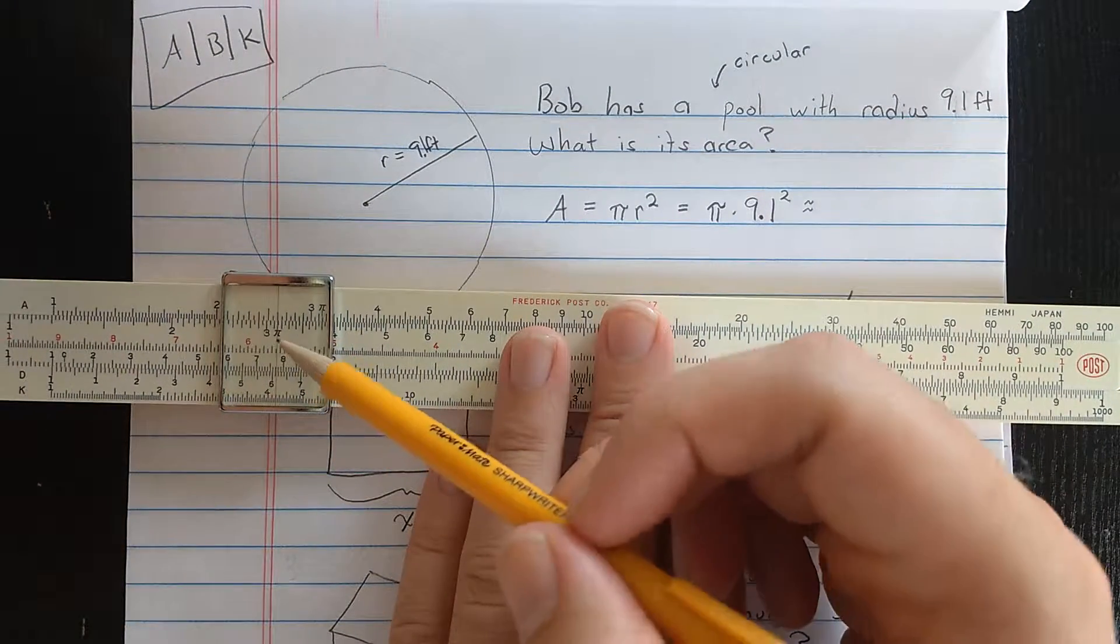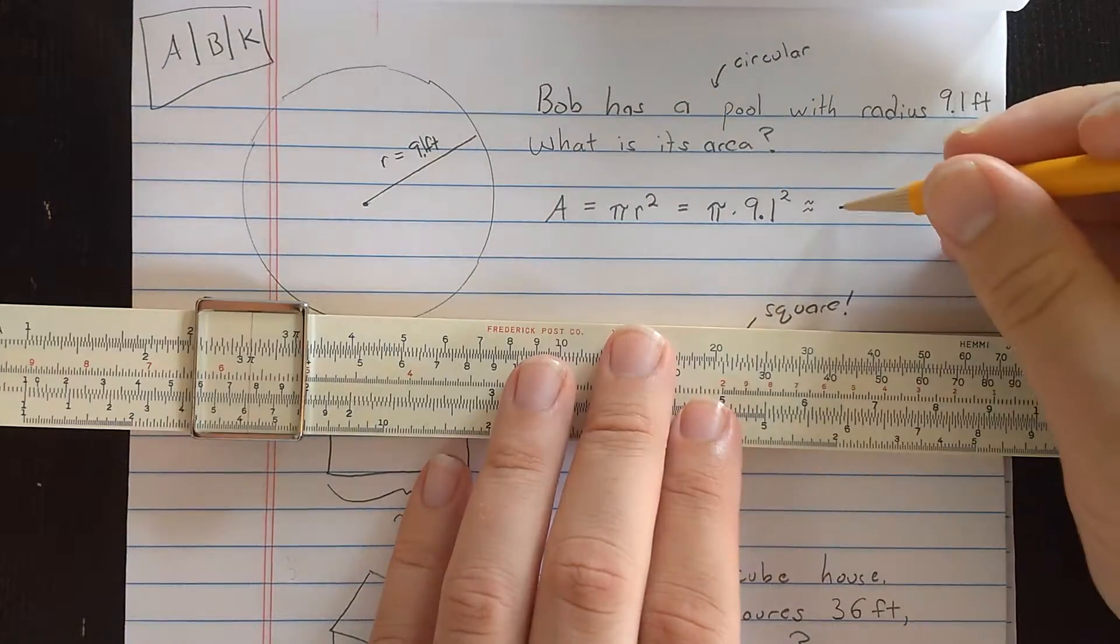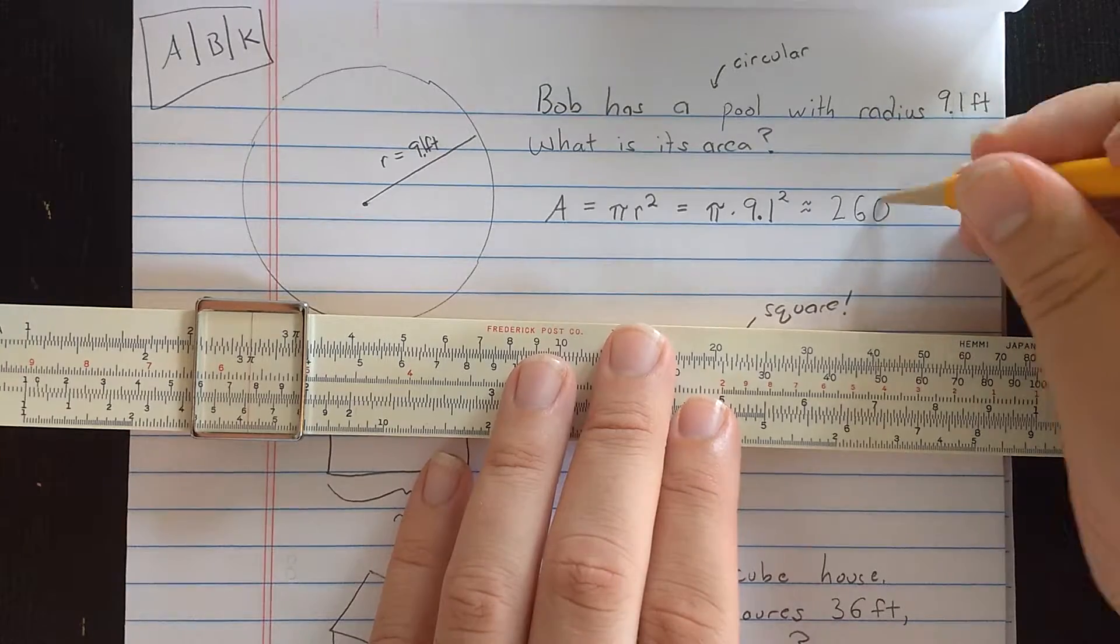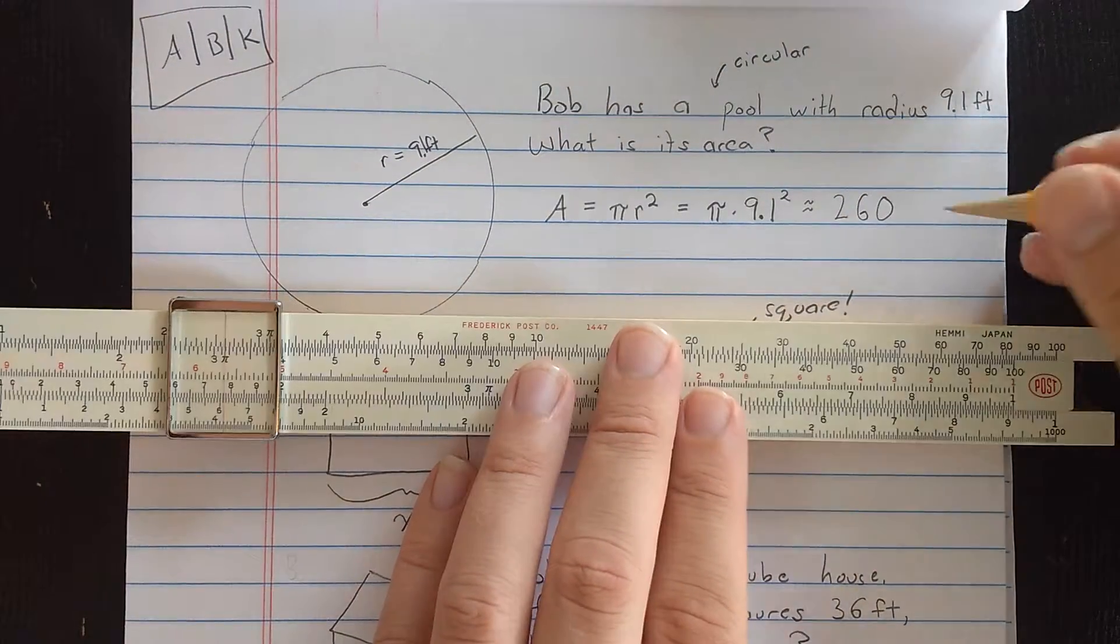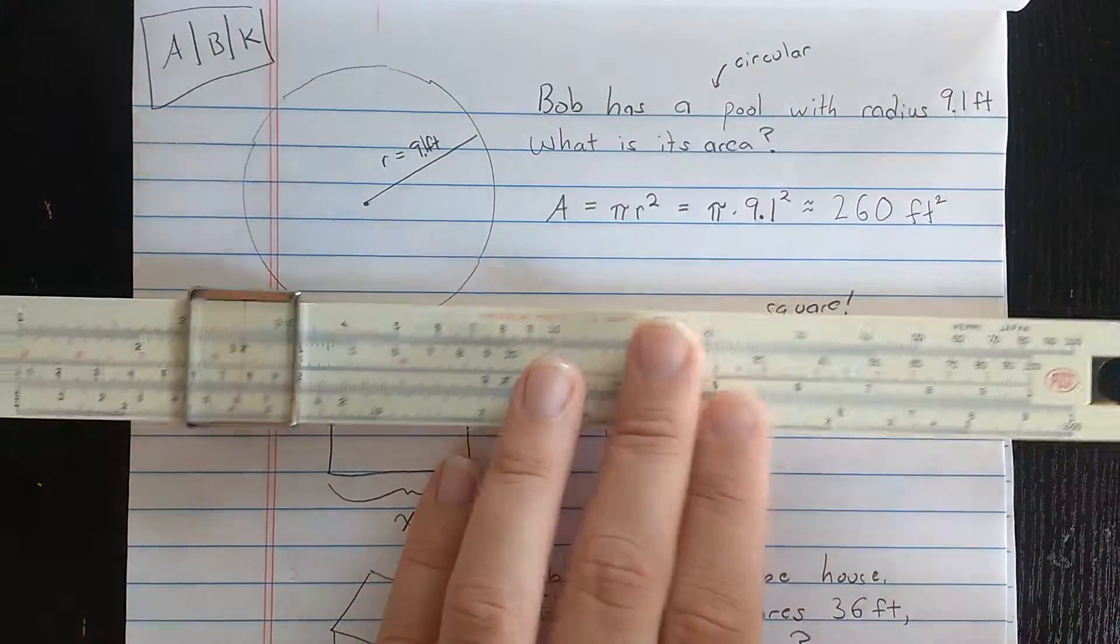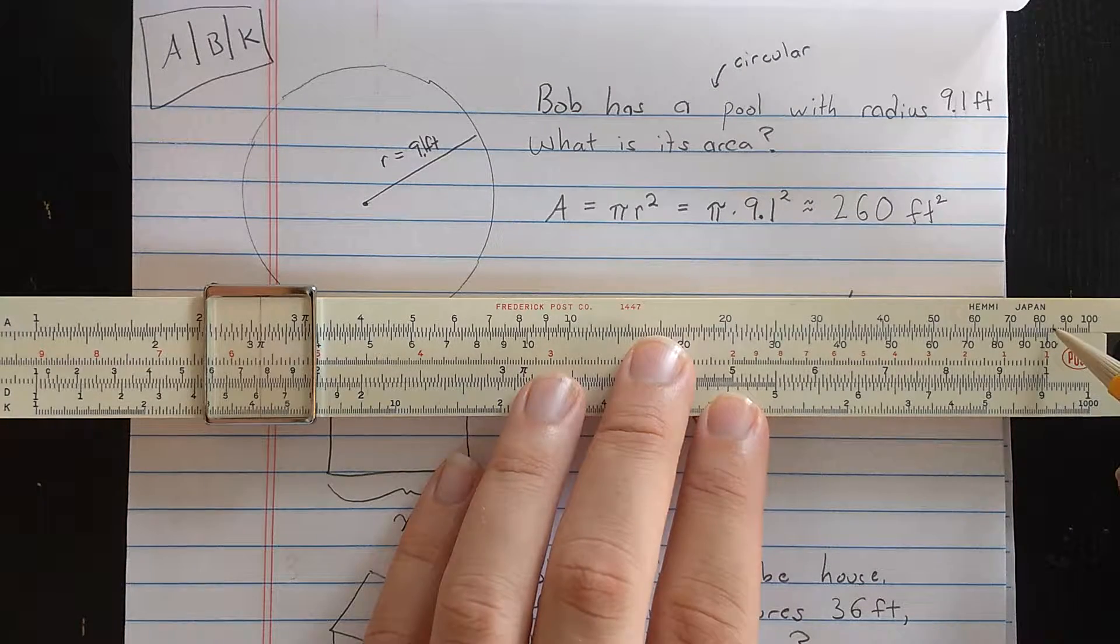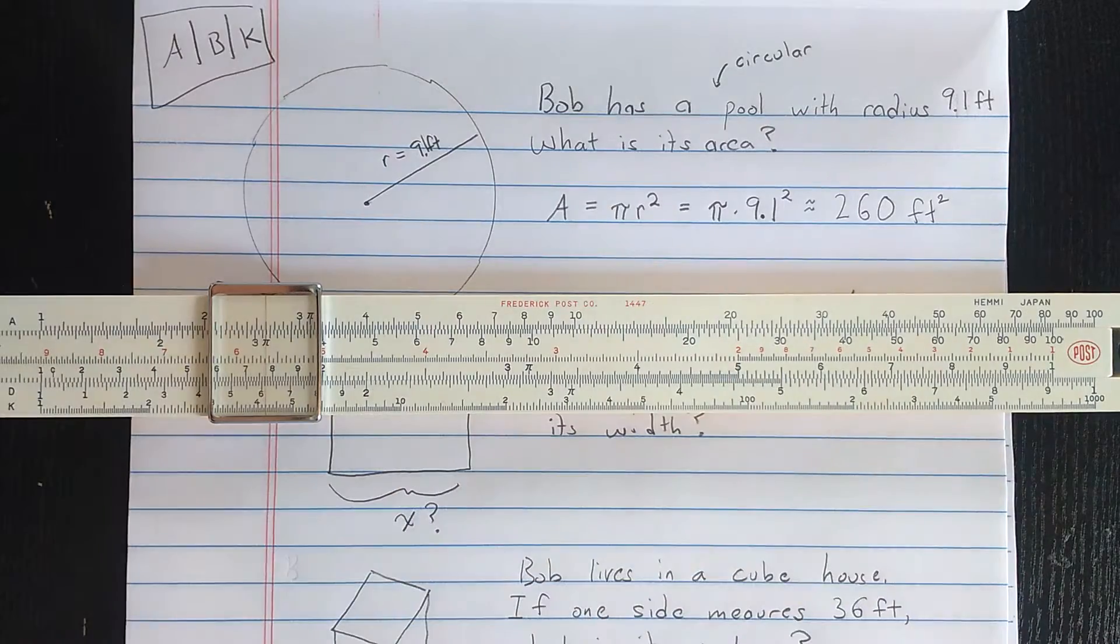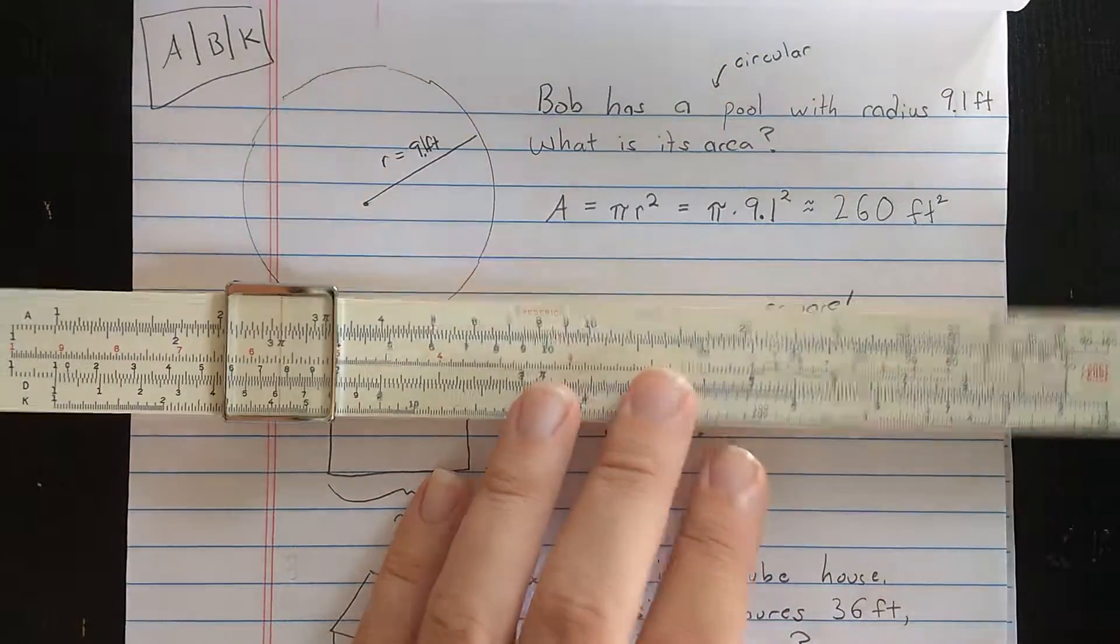Then the result is reading on the A scale looks like 2526. And the proper order of magnitude here would be 260 because it's pi times about 180. And this is square feet. So I used a combination of the idea that 9.1 squared was on the A scale and then I multiplied with A and B the same way you can multiply with C and D by aligning the index and going out to the second number.